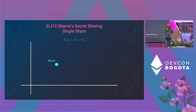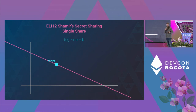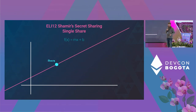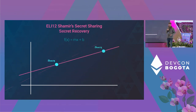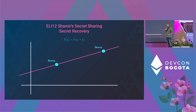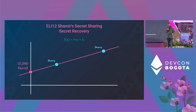If you have one share, you really don't know where that line is. But if you have two shares, then you can see where it crosses the y-axis, and you can determine what the secret is.